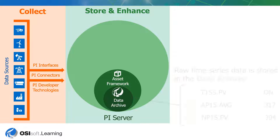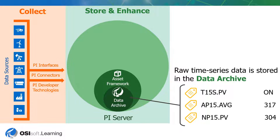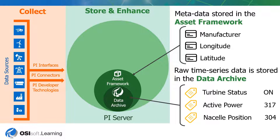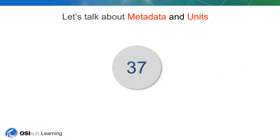Moving on to our store and enhance layers, we have PI Tags or PI Points that reside in the data archive — these are going to be raw time series data. We also have metadata with Asset Framework. Asset Framework provides context as well as a complete view of what's going on with particular assets in your infrastructure. Here we have some AF attributes to go along with our PI Tags.